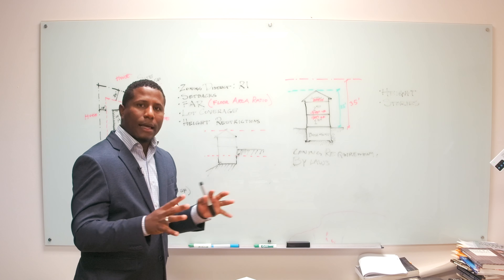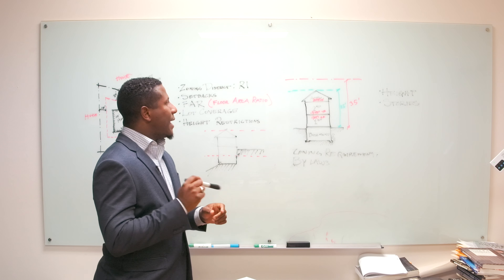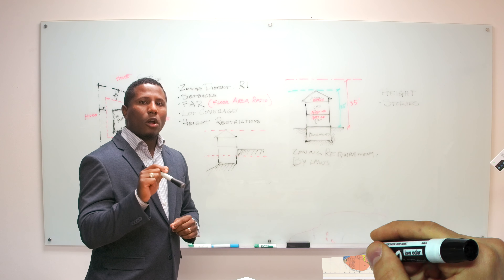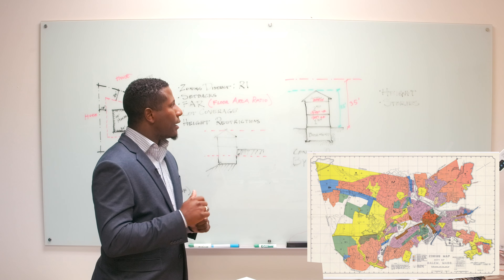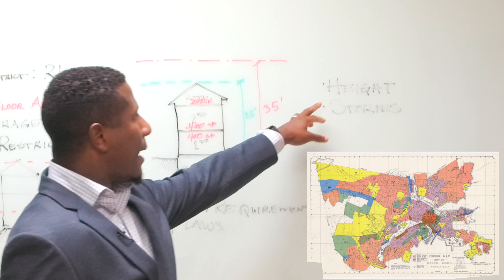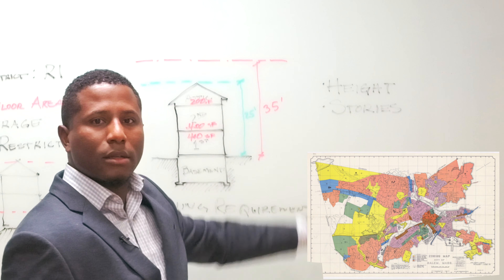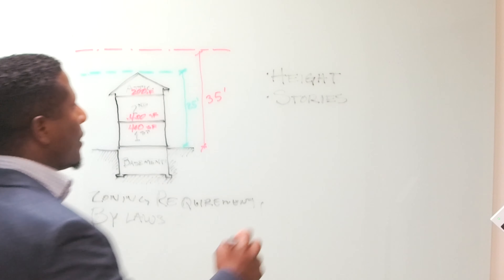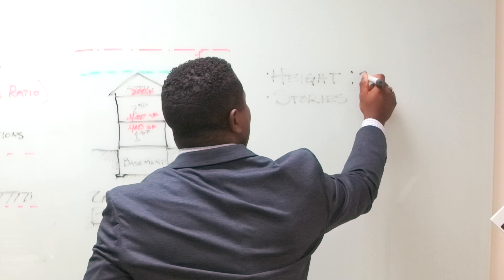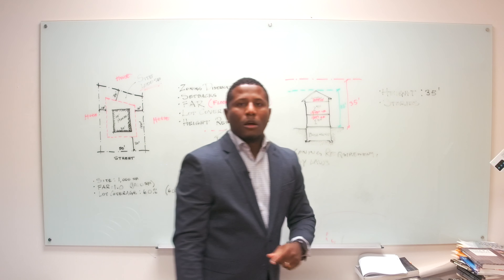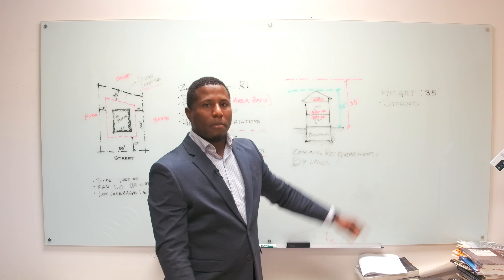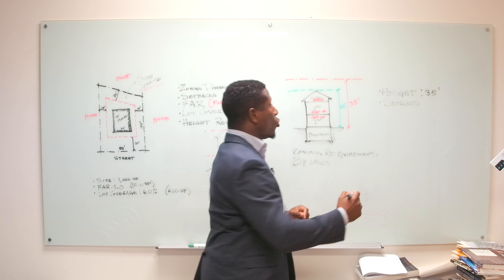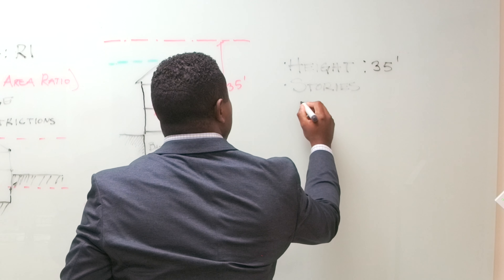After you understand how high you can go, it's very important that you look into your zoning bylaws to understand the difference between height and stories. That's very important because what happens is you might have a height maximum of 35 feet, but the story limit might be completely different — it might be 2.5 stories max, or it might be three stories max.